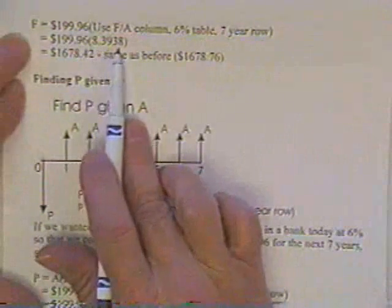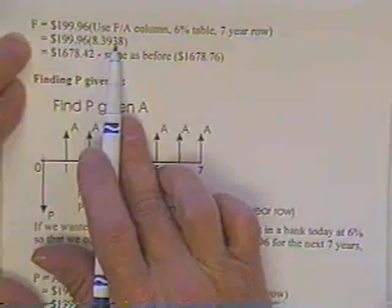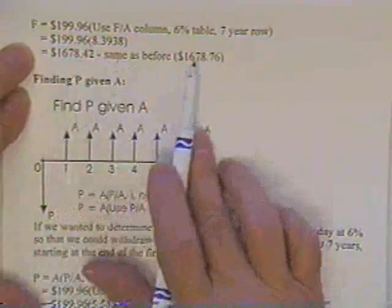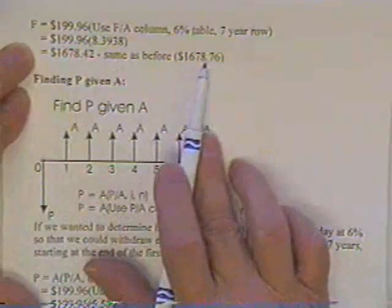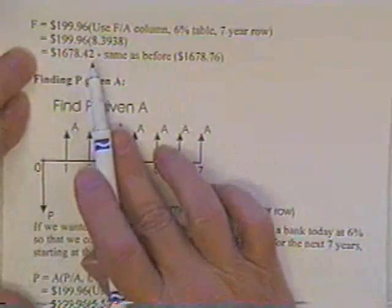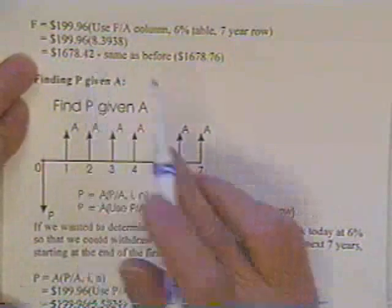The factor is $8.3938 if you'll check that in the book, which gives you $1,678, which is almost the same as we got before. There's only four decimals of accuracy on the number there, so you're not going to get exactly, but they're also not going to ask you answers that close either.